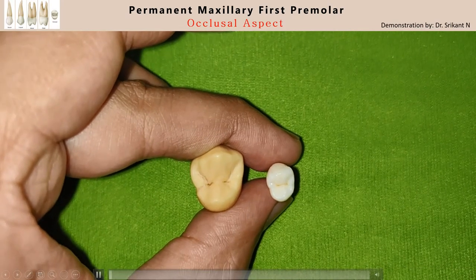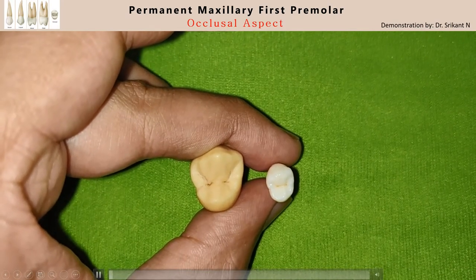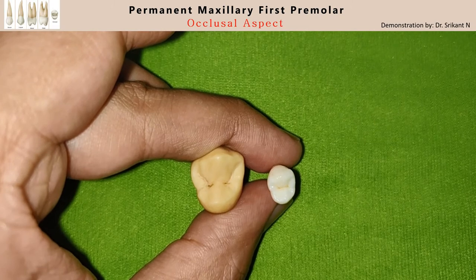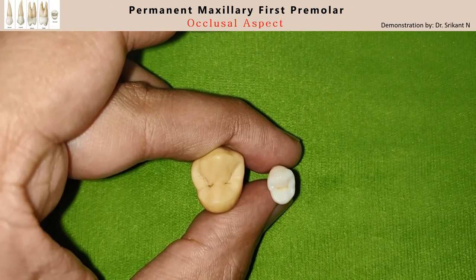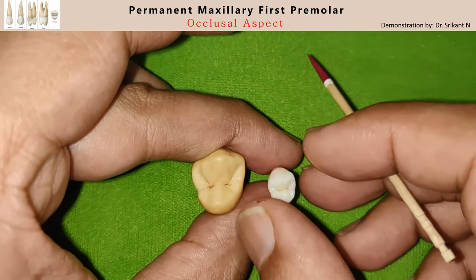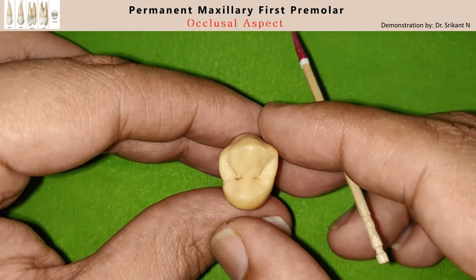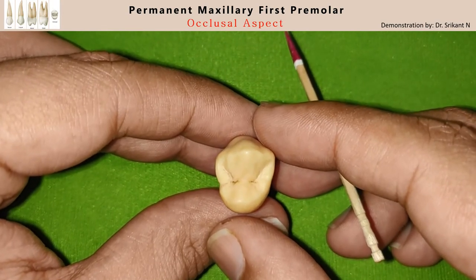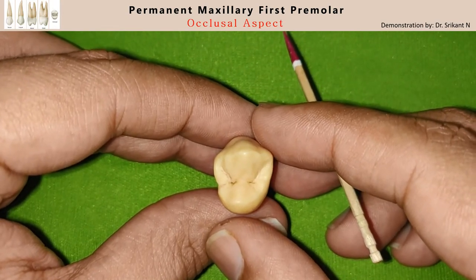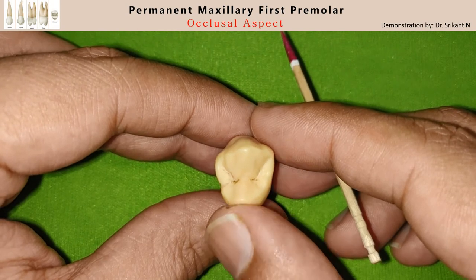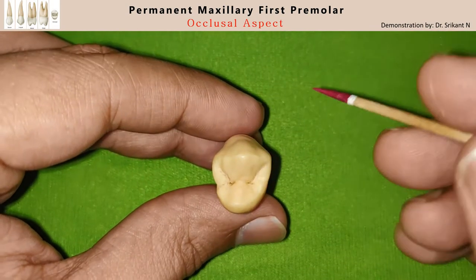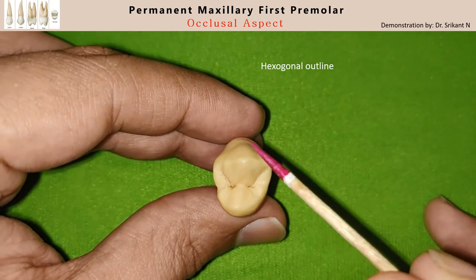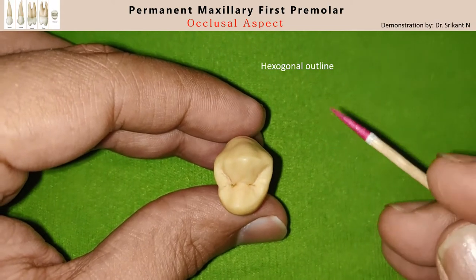In this video we shall be discussing the occlusal aspect of the permanent maxillary first premolar. Here we have a specimen of the left permanent maxillary first premolar. When you look at the occlusal surface, roughly it is hexagonal in shape.